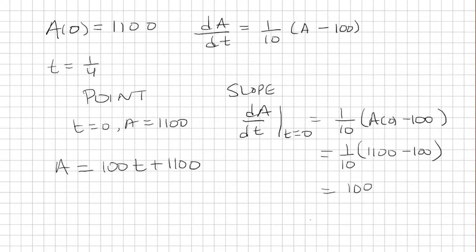So now we want to approximate t equals one-fourth. We're just going to plug in one-fourth in for t. Now one-fourth of 100 is 25. 1,100 plus 25 is 1,125. So that is the estimate. And this is going to be tons.